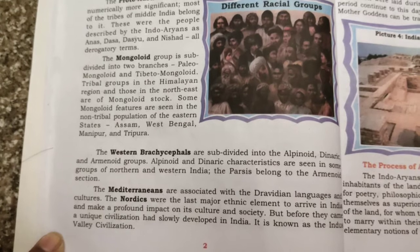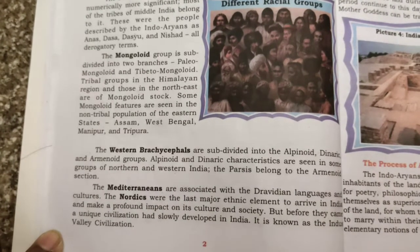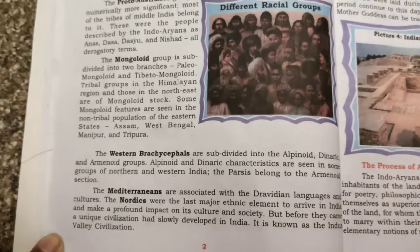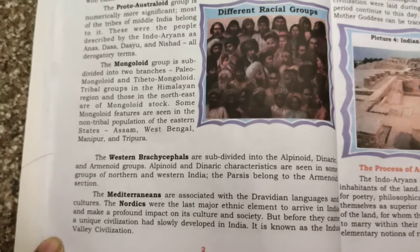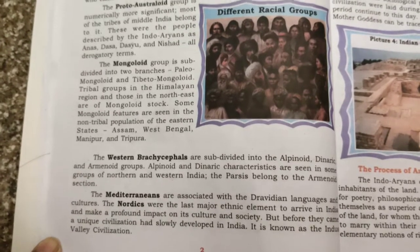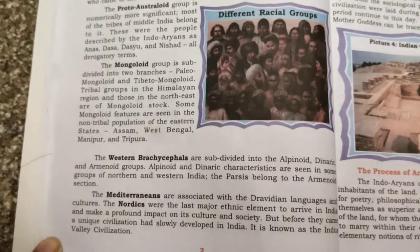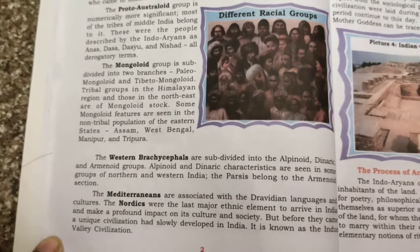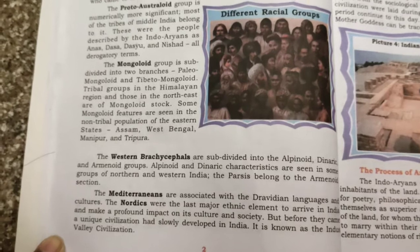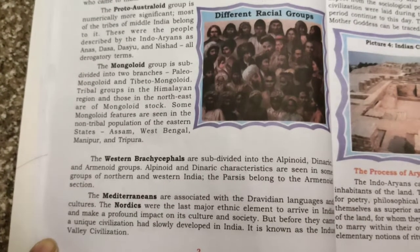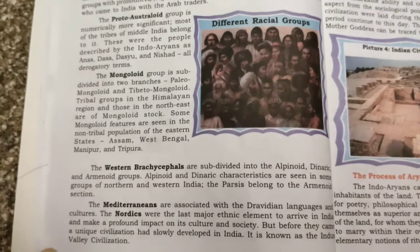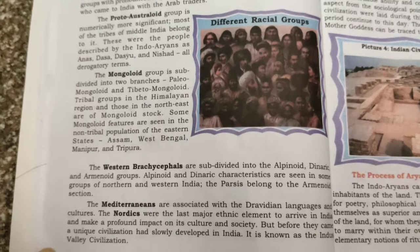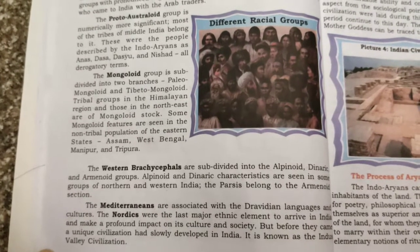The Nordics were the last major ethnic element to arrive in India and make a profound impact on its culture and society. But before they came, a unique civilization had slowly developed in India — known as the Indus Valley Civilization.